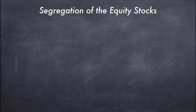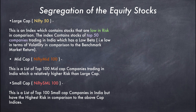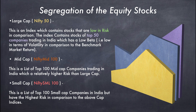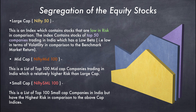Now we talk about the segregation of equity stocks. There are three separate segments: large cap, mid cap, and small cap. To choose stocks from each segment we refer to an index. For large cap we refer to Nifty 50, which has the top 50 best-performing stocks of the Indian stock market. For mid cap we choose from the Nifty Midcap 100, a list of the top 100 mid cap companies trading in India. For small cap we refer to the Nifty Small 100 index, which contains the top 100 companies in the small cap space.